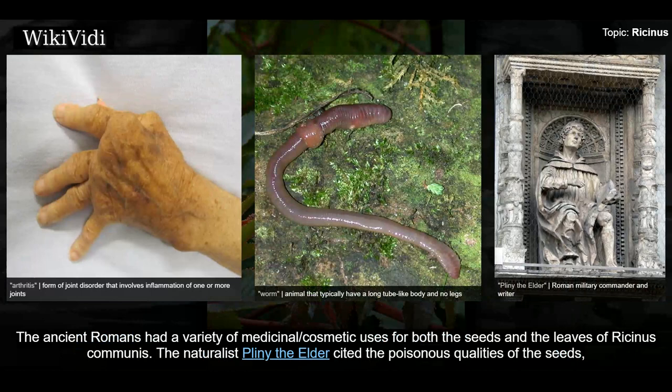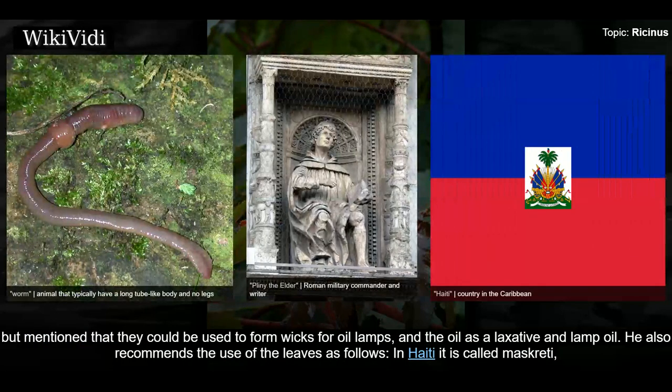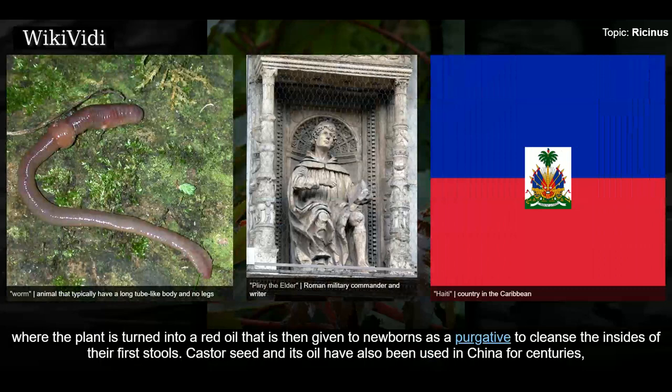The ancient Romans had a variety of medicinal and cosmetic uses for both the seeds and the leaves of Ricinus communis. The naturalist Pliny the Elder cited the poisonous qualities of the seeds but mentioned that they could be used to form wicks for oil lamps, and the oil as a laxative and lamp oil. In Haiti, the plant is called maskretti, where it is turned into a red oil that is then given to newborns as a purgative to cleanse the insides of their first stools.